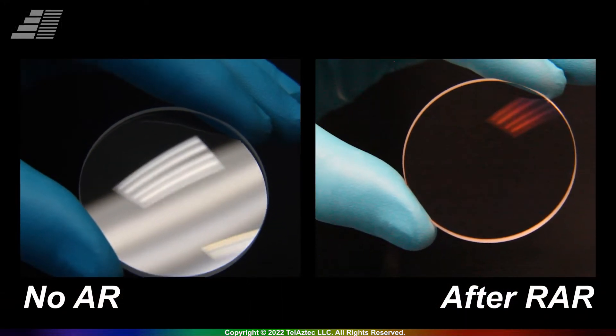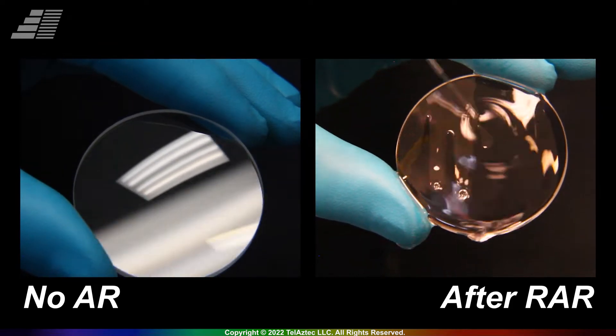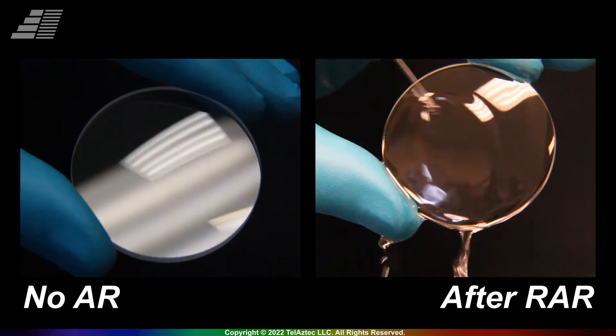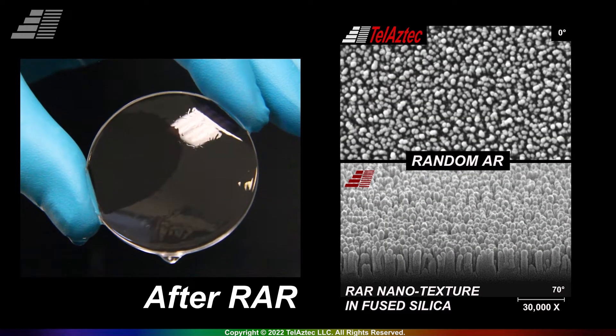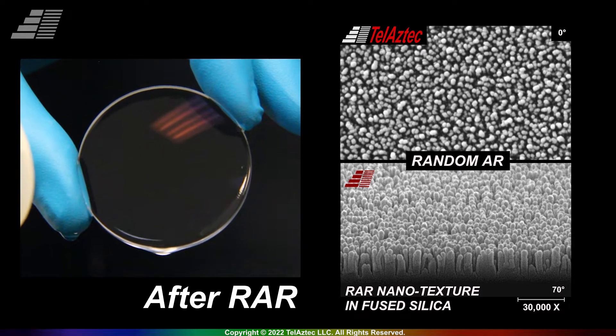The ultra-low reflection loss and extreme laser damage resistance of RAR-treated optics is due to nanometer-sized structures etched into the optic surfaces. These randomly distributed, densely packed, nanoscopic features form a mechanically durable texture that has a carpet-like appearance.